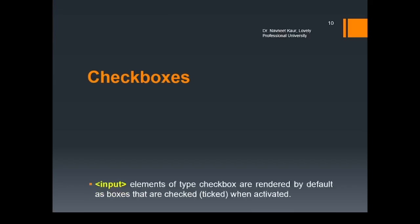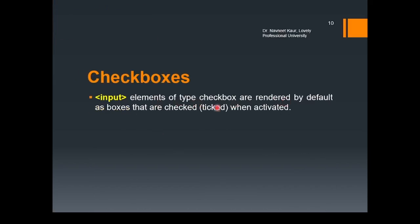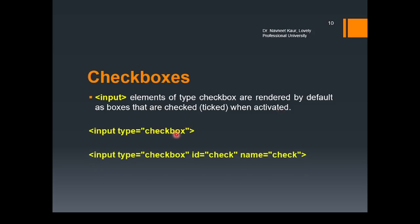Then we have checkboxes. Input elements of type checkbox are rendered as boxes which are checked or ticked when activated. These appear as small boxes you can tick mark and submit the form — for example, 'I agree to terms and conditions,' or selecting multiple hobbies like swimming, reading, or dancing. They are inserted using input type equals to checkbox. Optionally, id and name attributes can also be used.